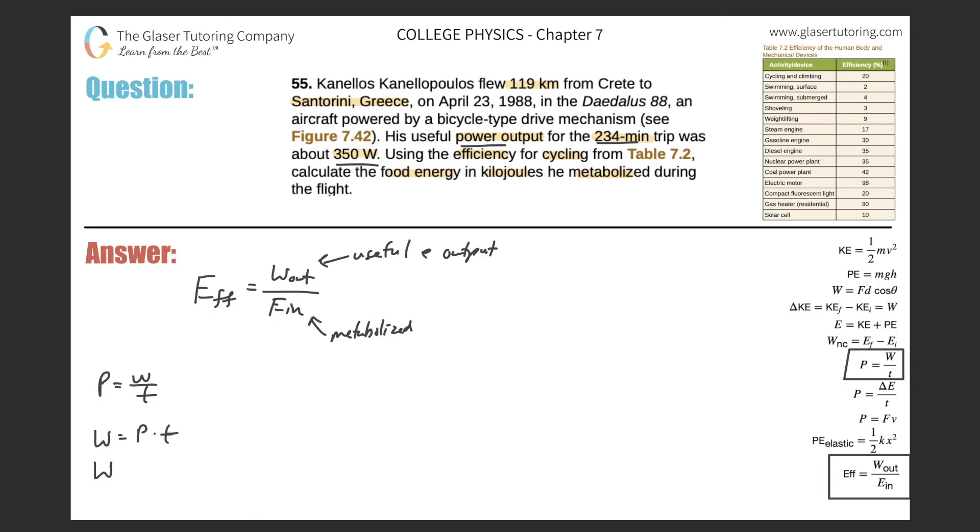All right, so the work is equal to the power that he outputted of 350 watts multiplied by the time. But remember, the time has to be in seconds. They gave it to me as 234 minutes, but that's easy. Minute to second, there's 60 seconds in a minute. So you take 234 and you multiply that by 60.